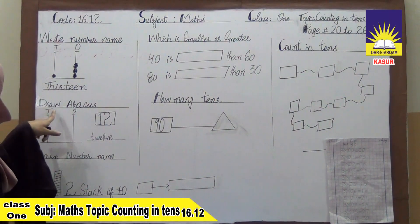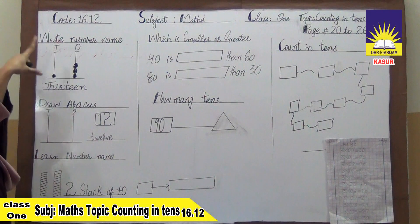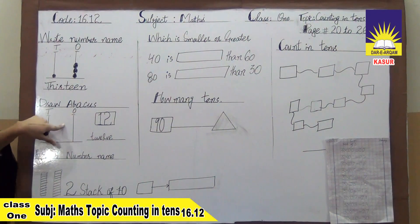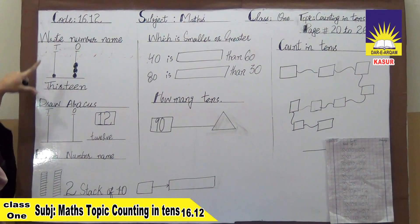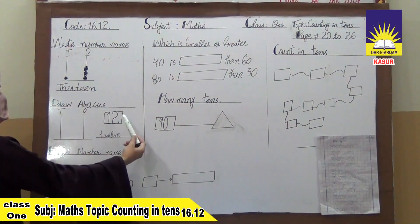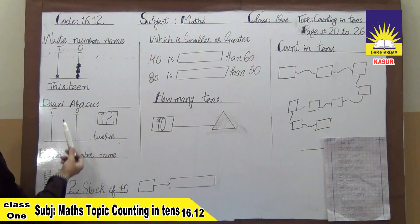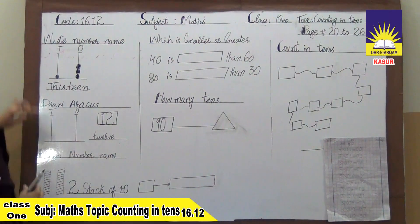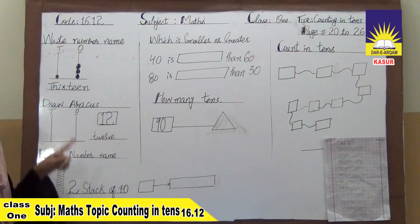Now our second question is draw backers. This question is the opposite of the first question. We have given them number names and they have to write the number. We have given the number here and we have to draw it. So we have given the question. This question is the same way. We will do this question.